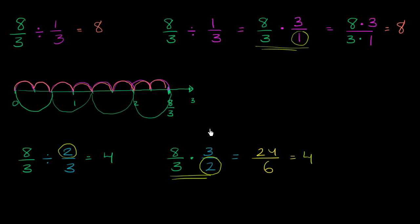It's easy to think about just mechanically how to divide fractions. Taking 8 thirds divided by 1 third is the same thing as 8 thirds times 3 over 1. Or 8 thirds divided by 2 thirds is the same thing as 8 thirds times 3 over 2. But hopefully this video gives you a little bit more of an intuition of why this is the case.